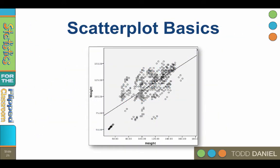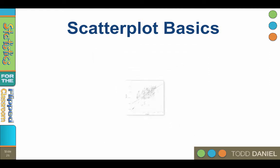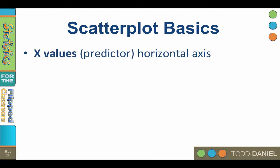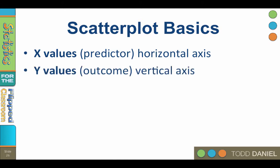We are going to create a scatter plot in SPSS. The scatter plot begins with an x and y axis in a graph. Set up your x and y axes and label them. The x values, the predictor values, go on the horizontal axis. The y values, the criterion variable or outcome variable, will go on the vertical axis. This tells us that x is being used to predict y.